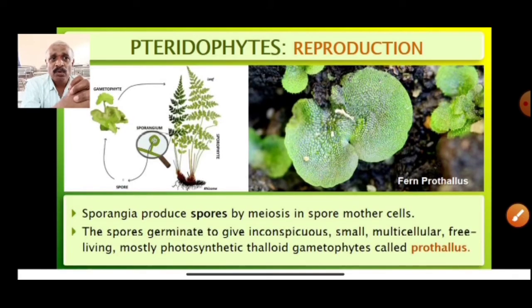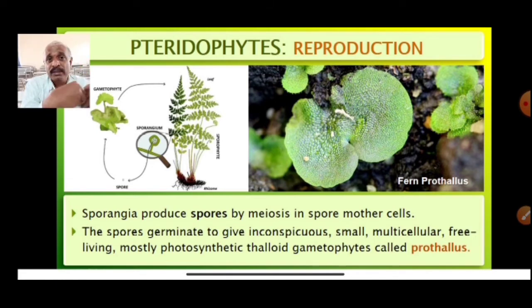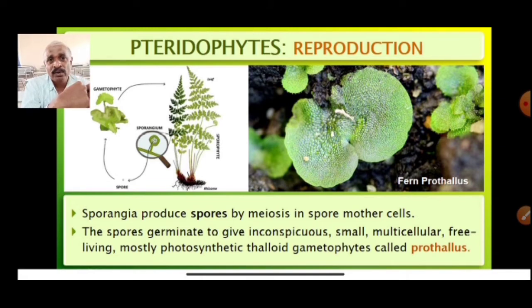Sporangia produce spores by meiosis — meiosis is 100% the division used. The spore mother cells are diploid, and from them spores are formed, so meiosis is the only division occurring here.